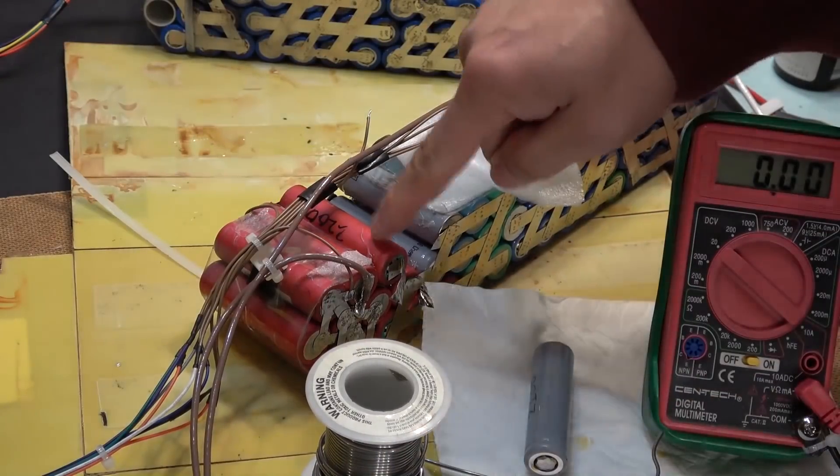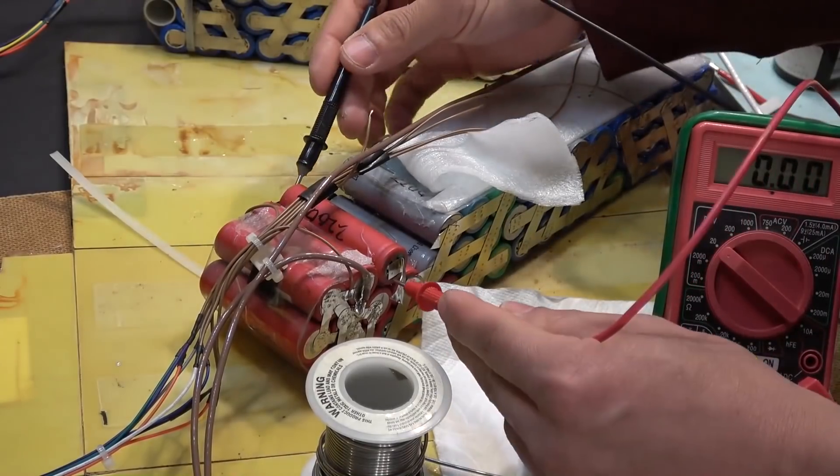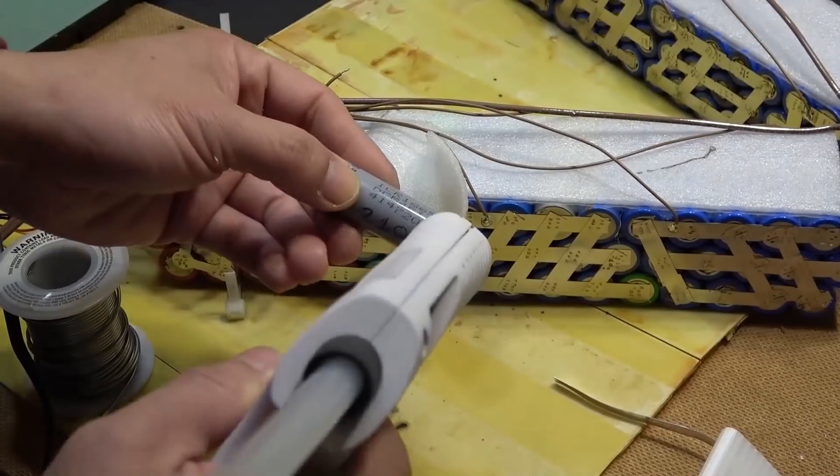Let's make sure this battery's voltage is the same as this battery's voltage. 4.12 volts. 4.13 volts. Use my hot tool gun and fill it in place.